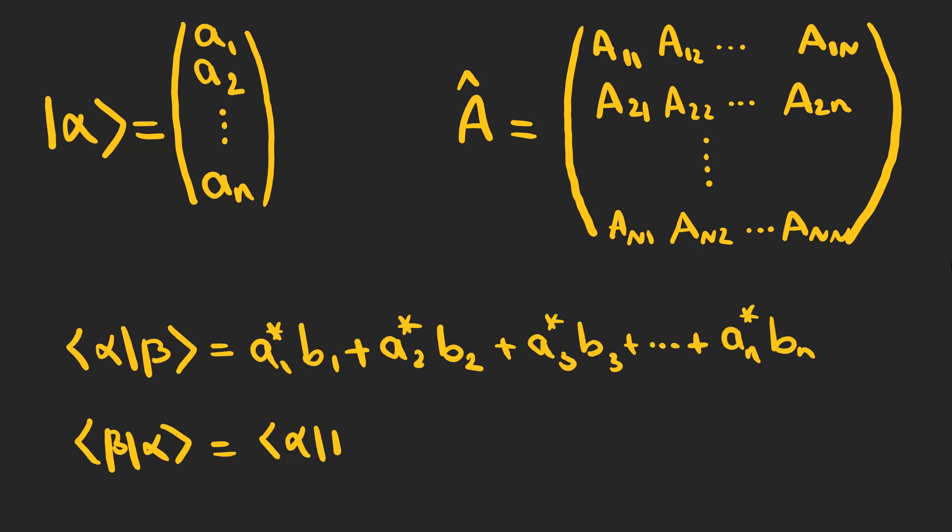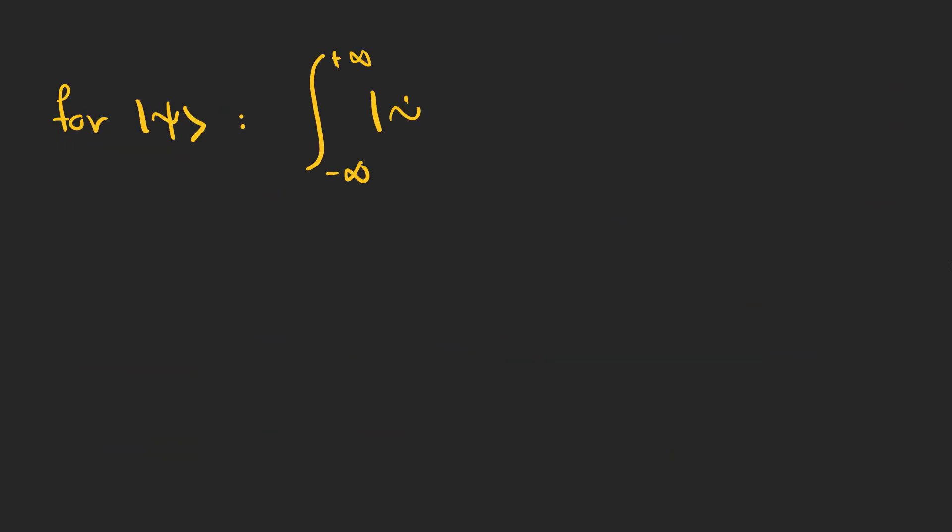We can also define an inner product of two vectors which gives a complex number. On the other hand, we know that the states we usually come across in quantum mechanics must be normalizable.